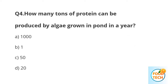Question number 4. How many tons of protein can be produced by algae grown in ponds in a year? A. 1,000. B. 1. C. 15. D. 20.